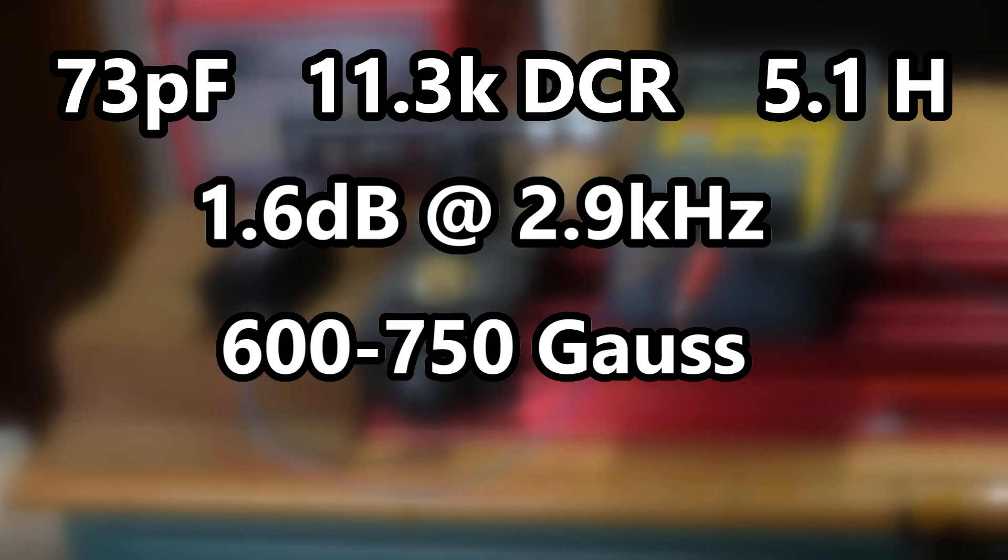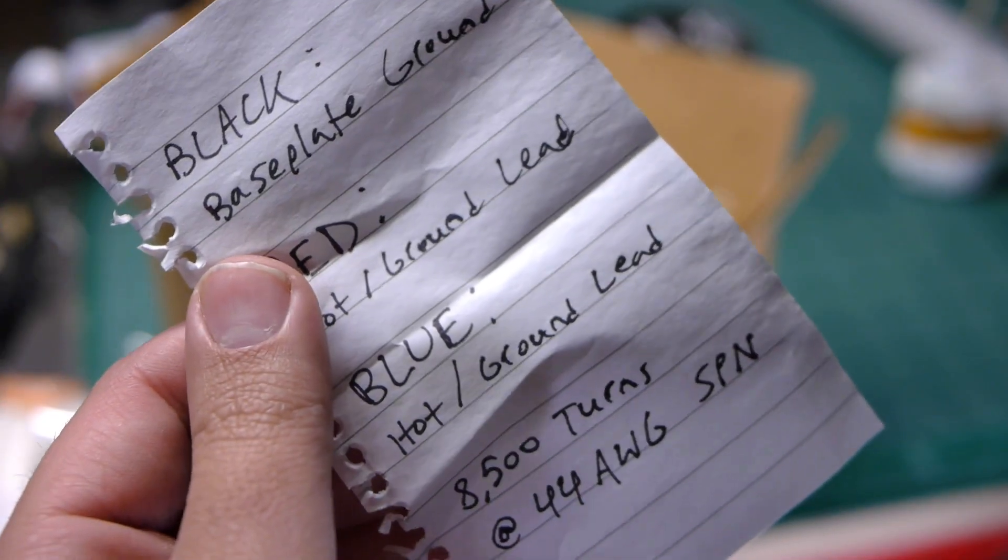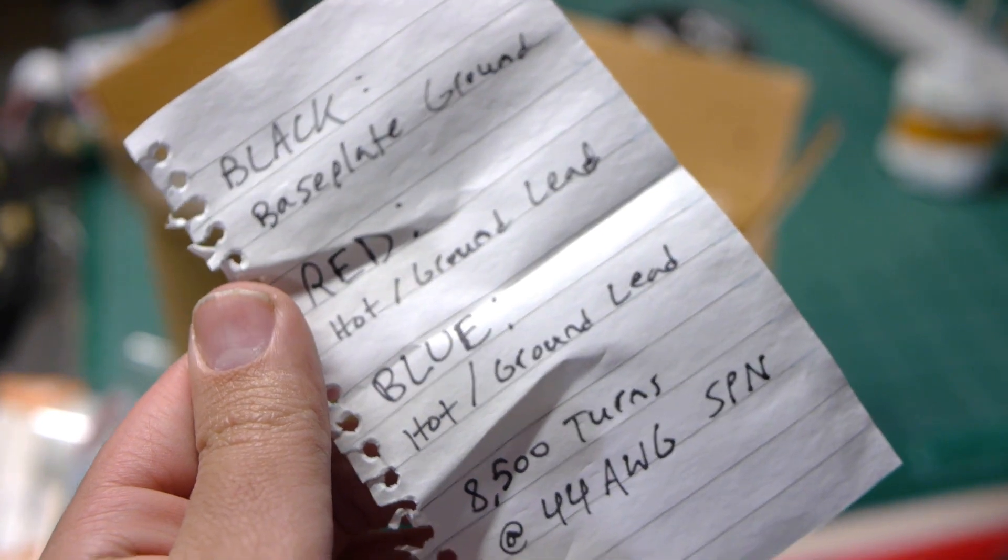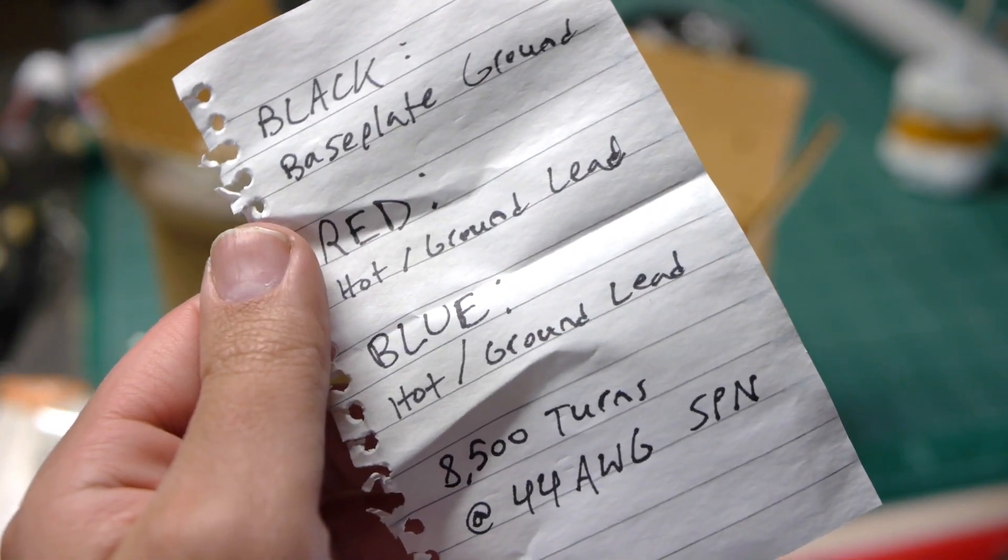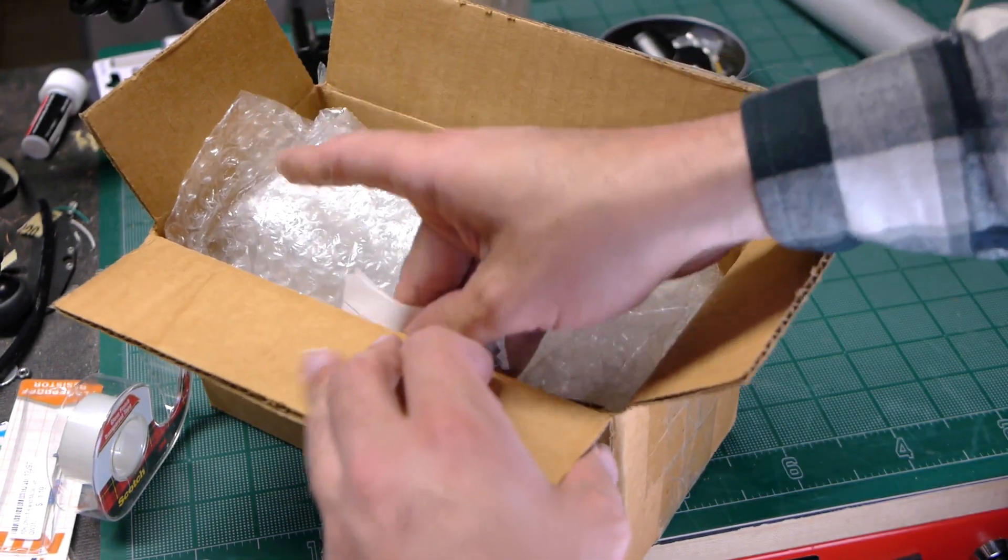I'll write down the turn count and wire gauge to wrap everything up. 8,500 turns with 44 gauge magnet wire. SPN stands for single-build poly-nylon, which is the insulation type of the wire. The customer ended up very happy with the pickup, said it sounded great and balanced perfectly with the neck pickup, which of course I was thrilled to hear, and he even sent me a tip, which I very much appreciated, and took that as an additional sign of how successful the rewind was.